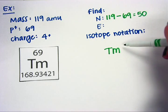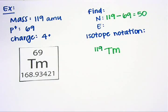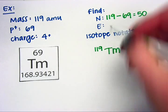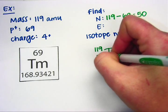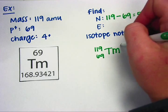When writing isotope notation, the mass always goes in the upper left-hand corner. I could write the number of protons if I wanted to in the bottom left-hand corner. The other piece of information I need to include is my charge.